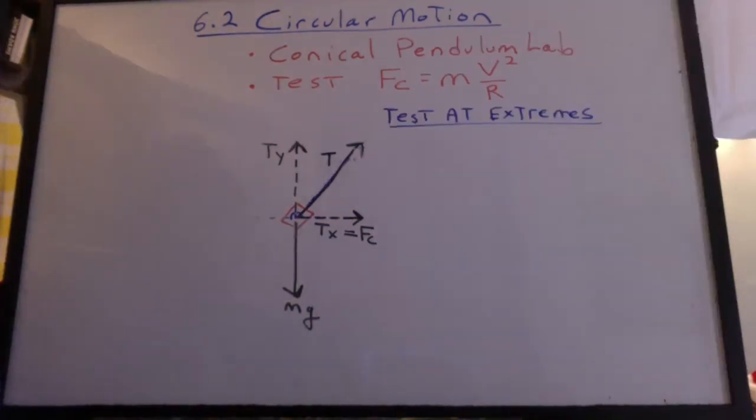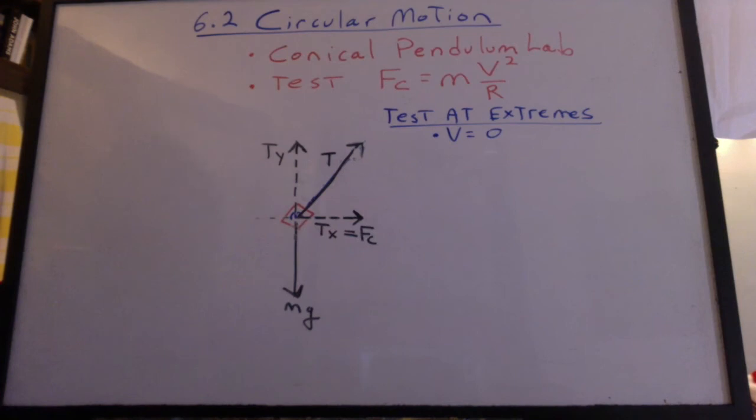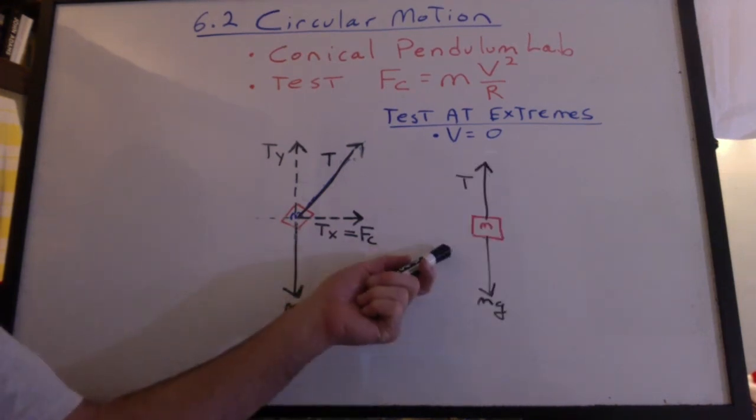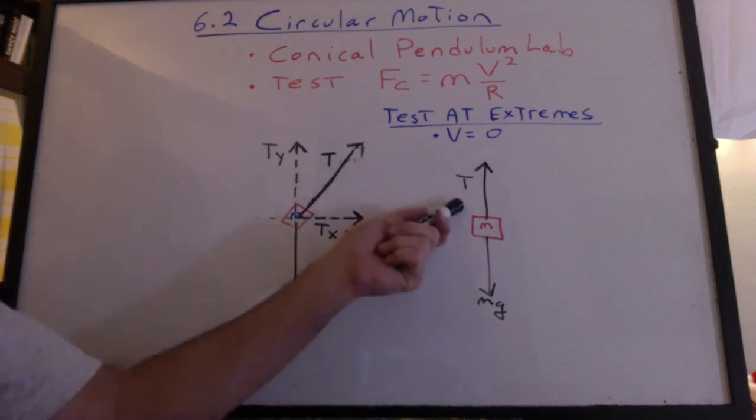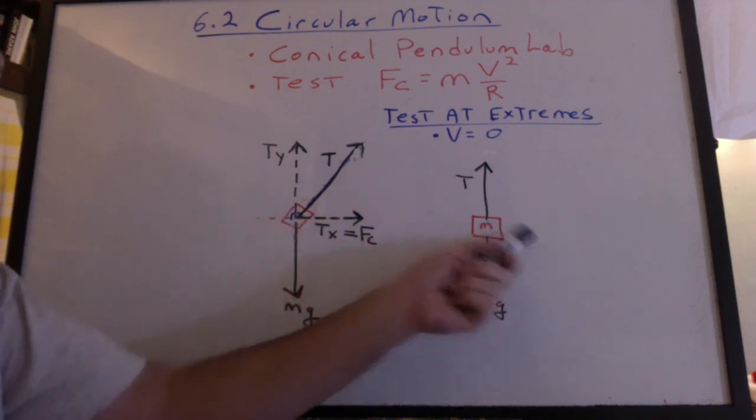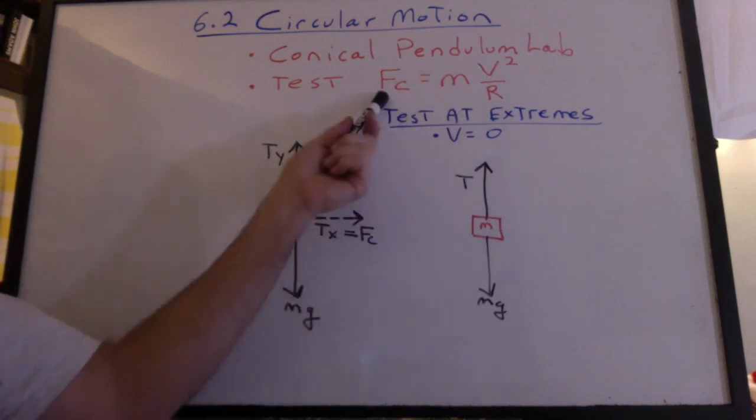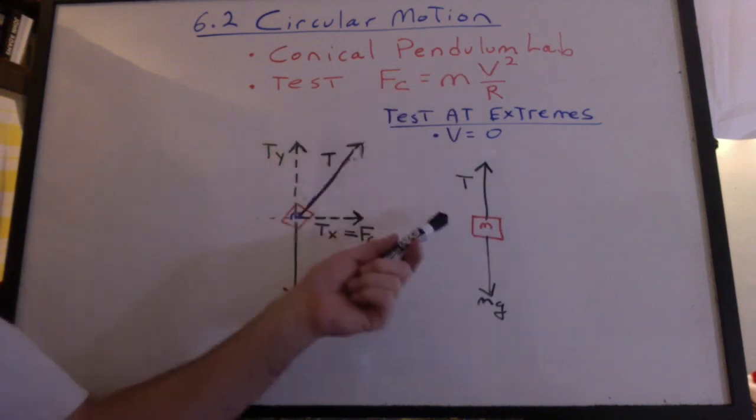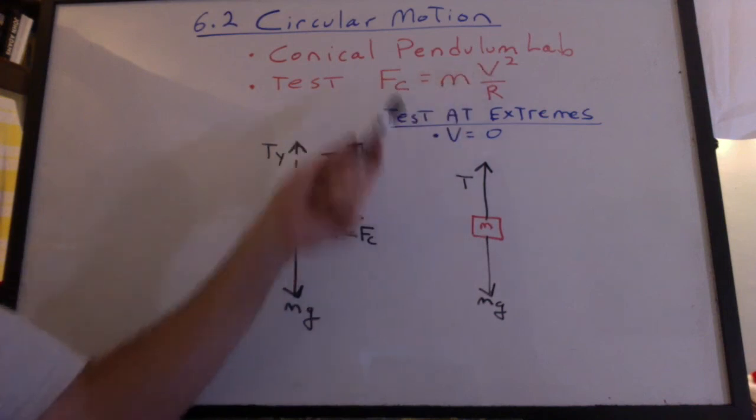Something else we can do is to test the formula at extremes. What if the velocity was zero? What would the diagram look like? We wouldn't be swinging it around at all. It would just be dangling vertically. Mg would be stopped by the tension, which would now be pulling straight up. There'd be no x component. If there's no velocity, there's no centripetal force. There'd be no need for an x component. So yeah, that would work. Velocity is zero. Fc is zero.